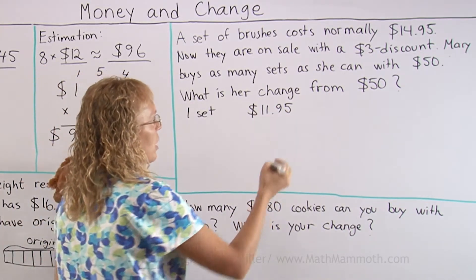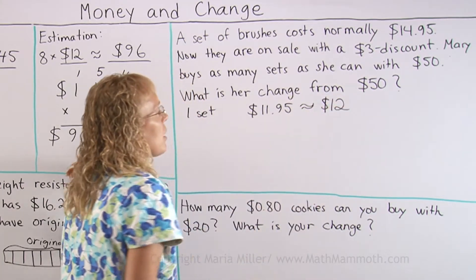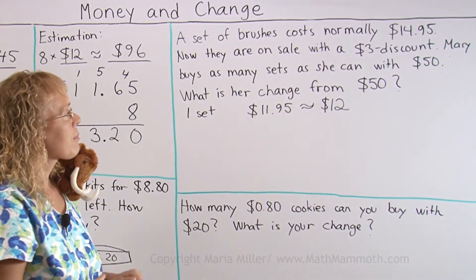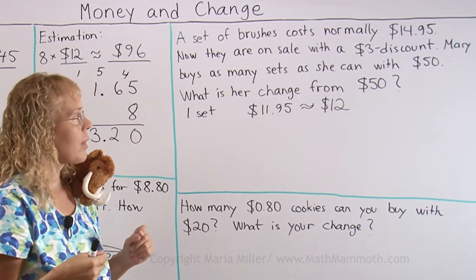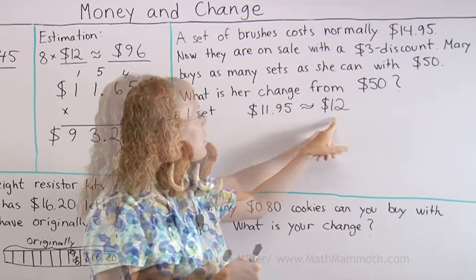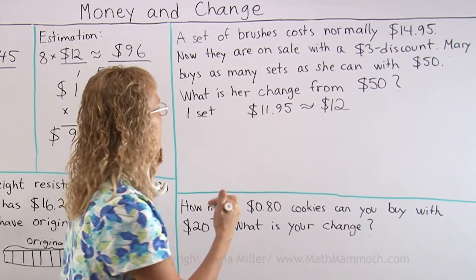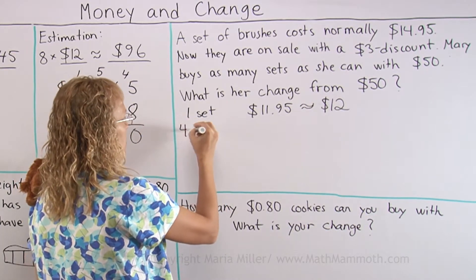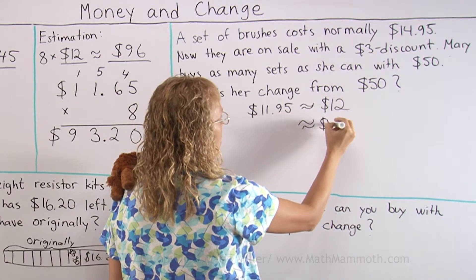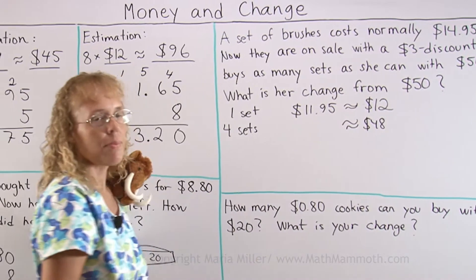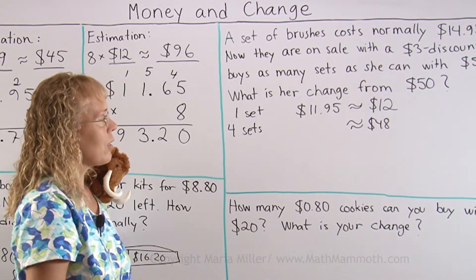This is really close to $12 — let me see if we can use that. If one set costs $12, how many could you buy with $50? It's much easier to work with this rounded number, and we can see that four sets would be about $48. So she can buy four sets with her $50.